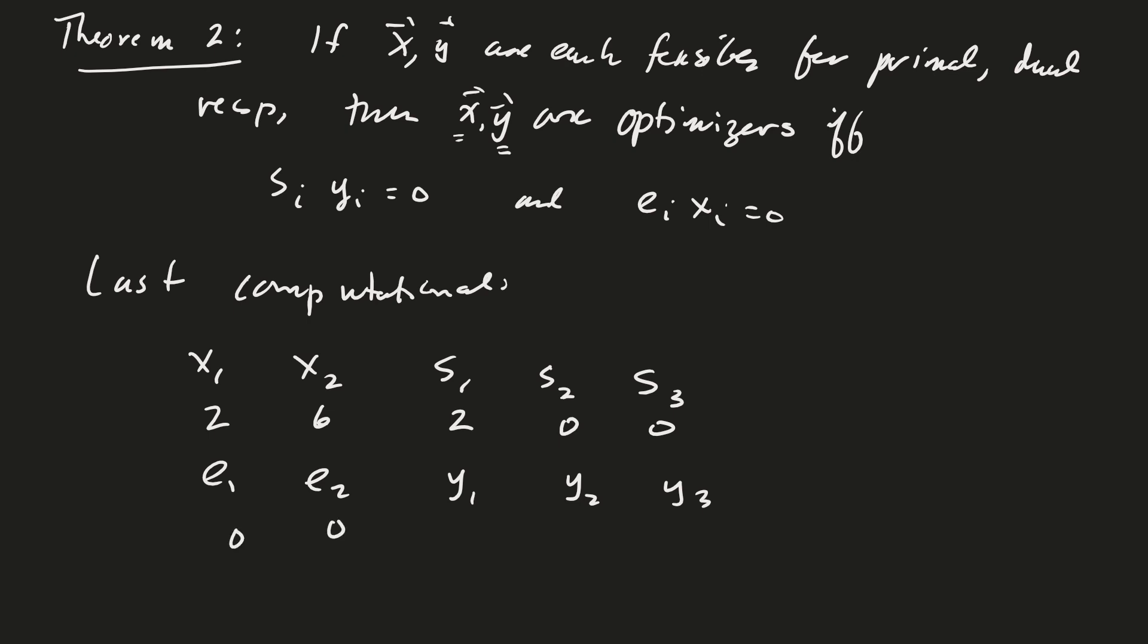And 2 and 0, 0. And then we had e1 and e2 being 0, 0. y1 was 0, 3 halves, and 1. And you might notice that this relationship that we're talking about is holding, where we have e1 times x1 equals 0.